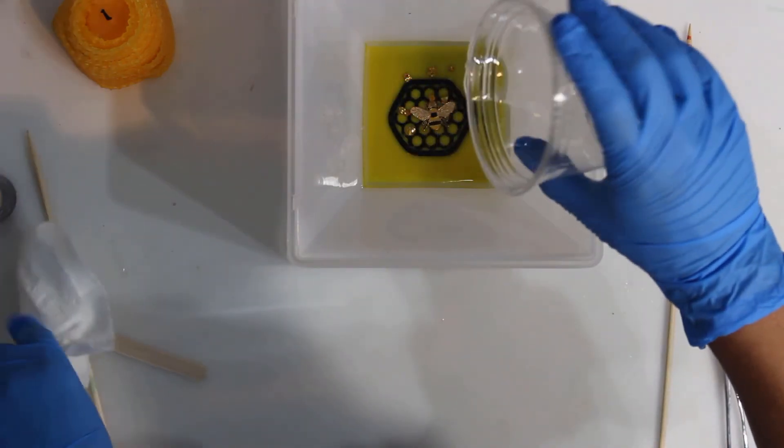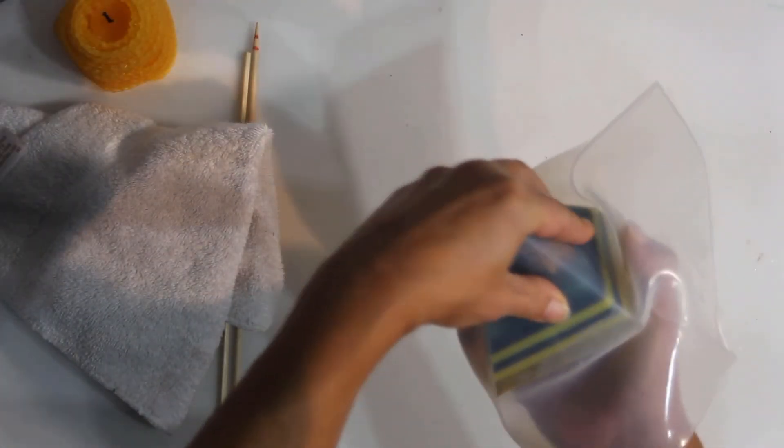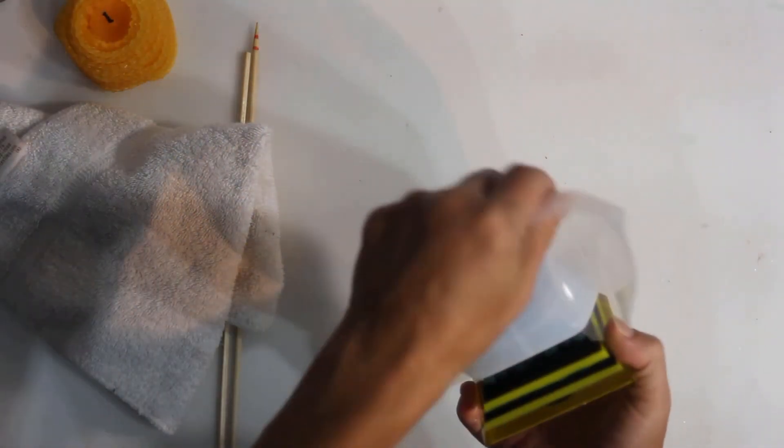Then pour the honey colored resin to finish it off. I let the pyramid sit an additional 12 to 24 hours in the mold and then...